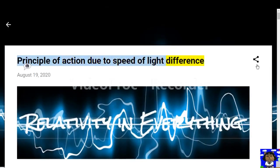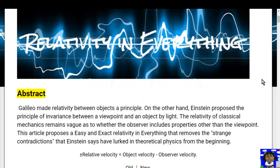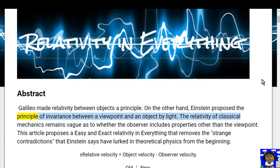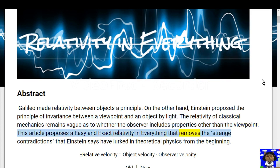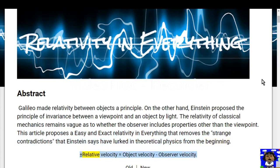This paper addresses the principle of action due to speed of light difference. Abstract, dated August 19th, 2020: Galileo made relativity between objects a principle; on the other hand, Einstein proposed the principle of invariance between a viewpoint and an object by light. The relativity of classical mechanics remains vague as to whether the observer includes properties other than the viewpoint. This article proposes an easy and exact relativity in everything that removes the strange contradictions Einstein says have lurked in theoretical physics from the beginning. Plus or minus relative velocity equals object velocity minus observer velocity.